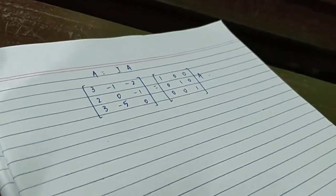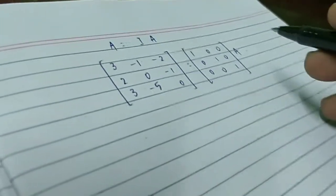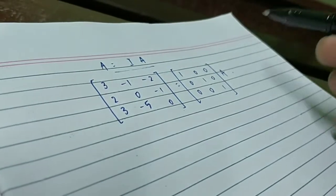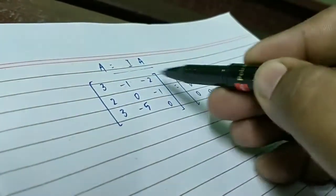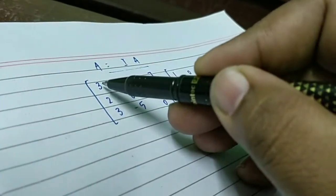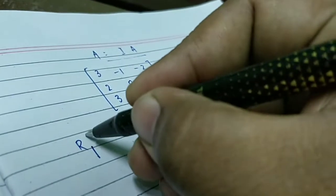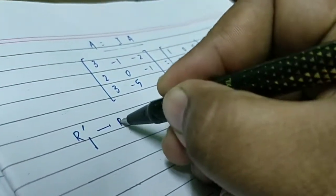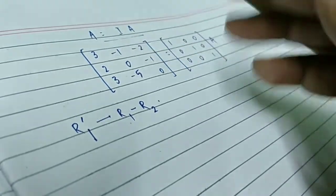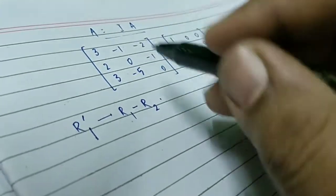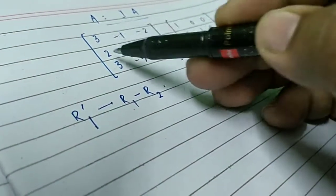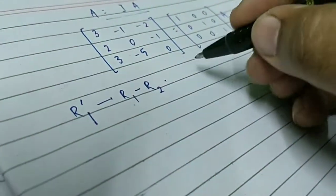Now we perform the elementary row operations. We write A = IA, substitute the left-hand A with the given matrix, I with the identity matrix, and keep the right-hand A as such. We need to make the first column 1, 0, 0. To make A11 equal to 1, let row 1 become row 1 minus row 2. If you do 3 minus 2, you get 1. Here is an accuracy tip: whenever operating a particular row, first copy down all rows not being modified — here rows 2 and 3 remain as 2, 0, minus 1 and 3, minus 1, 0.